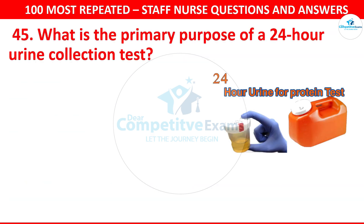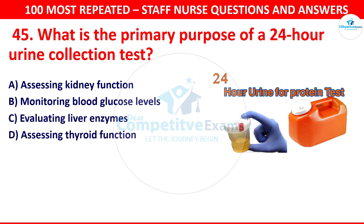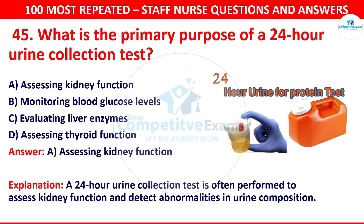Question number 45: What is the primary purpose of a 24-hour urine collection test? Options are assessing kidney function, monitoring blood glucose levels, evaluating liver enzymes, or assessing thyroid function. The correct answer is assessing kidney function. A 24-hour urine collection test is often performed to assess kidney function and detect abnormalities in urine composition.